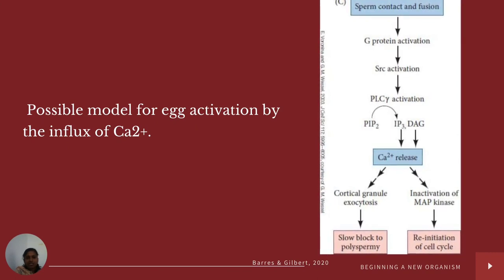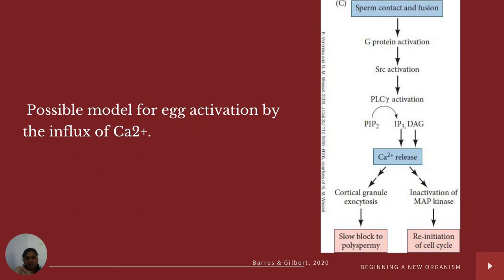A possible model for egg activation by the influx of calcium ions shows sperm contact and fusion activating cytoplasmic G-protein coupled receptors, which activate the G-protein, leading to activation of the Src family kinase, which activates phospholipase C-gamma. This cleaves phosphatidylinositol diphosphate into inositol triphosphate and diacylglycerol, and both together cause calcium release. As the concentration of calcium inside increases, it results in cortical granule exocytosis leading to the slow block to polyspermy, and also leads to inactivation of MPF kinase, resulting in re-initiation of the cell cycle. This is how fertilization causes activation of the egg.